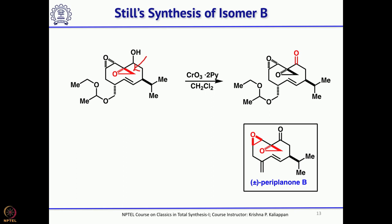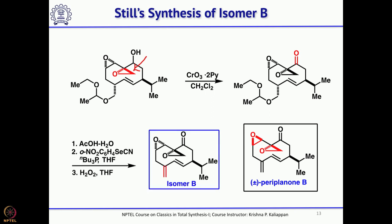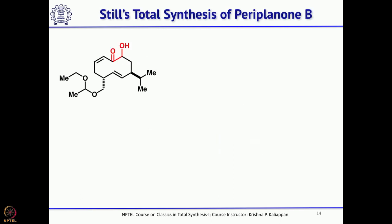Oxidation gave the ketone, followed by the same three-step protocol to convert it into the double bond. Now looking at this second isomer, all features are the same except one epoxide — here the epoxide is exactly opposite to Periplanone B. So again he had to go back.